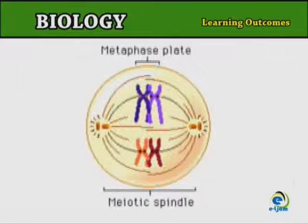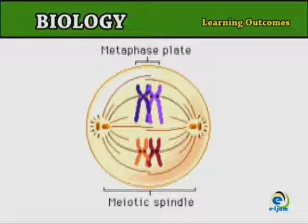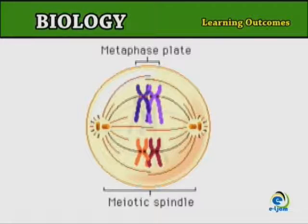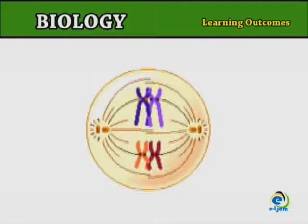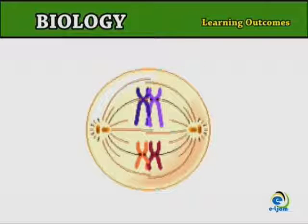Metaphase I: The nuclear envelope breaks down and the homologous chromosomes move to the equator of the spindle. Homologous chromosomes are positioned so that the centromeres orientate towards opposite poles.